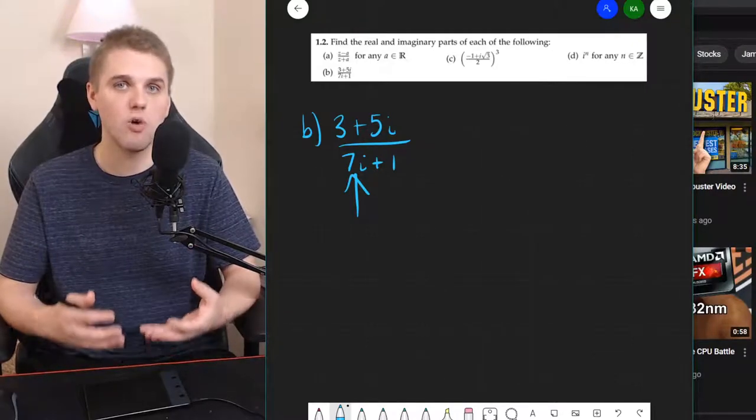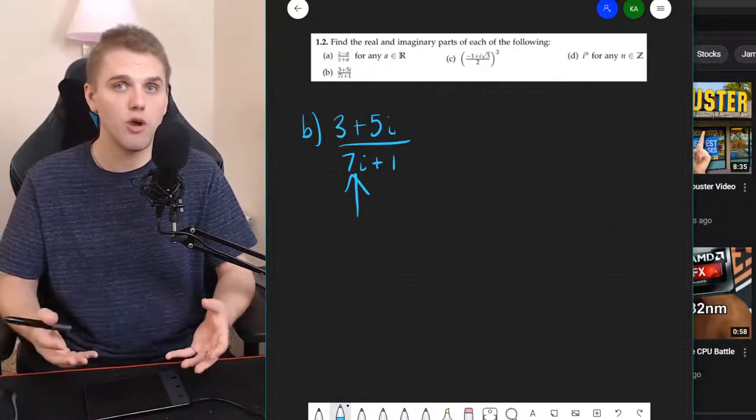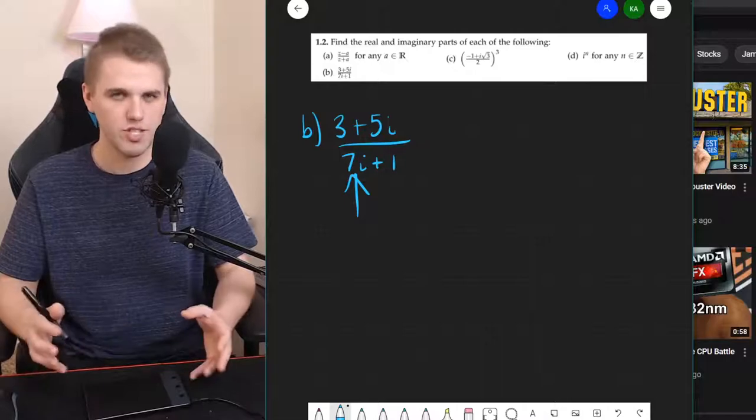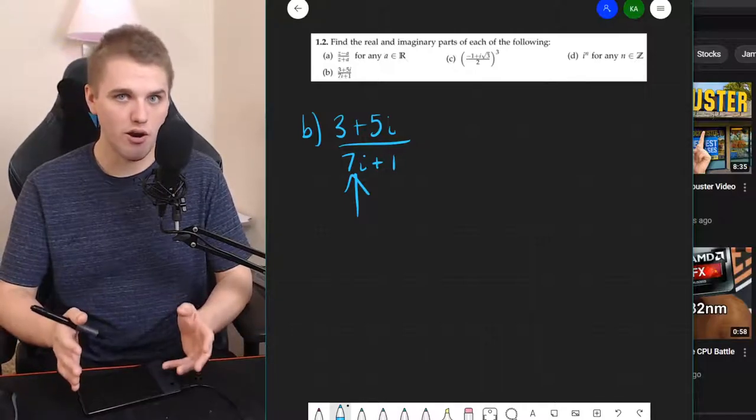Imaginary parts are really difficult to work with mathematically when they're in the denominator. When they're in the numerator they're a lot easier to work with and we'll see why pretty soon. So how do we get rid of this imaginary part in the denominator?